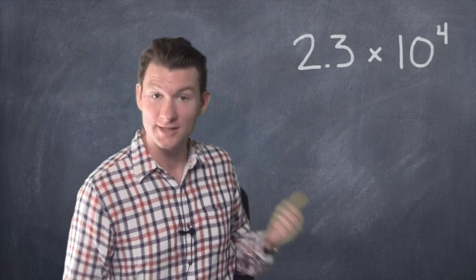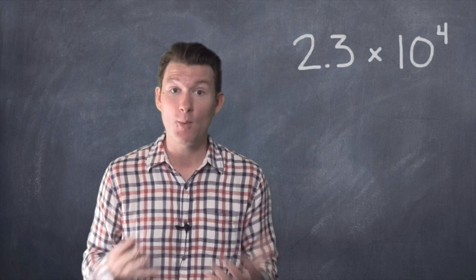We've got 2.3 times 10 to the fourth. You've got something like this, and you've got to rewrite it in standard form, like a normal number. And I want to show you how to do that.